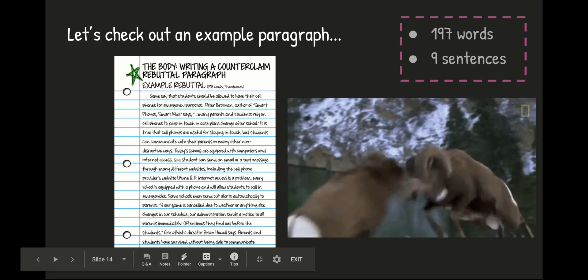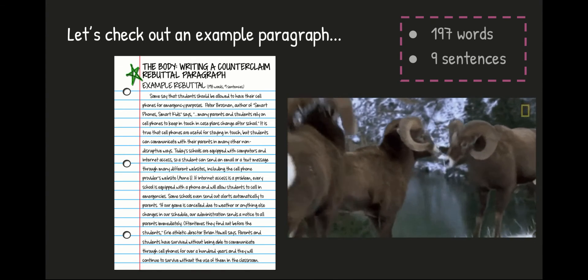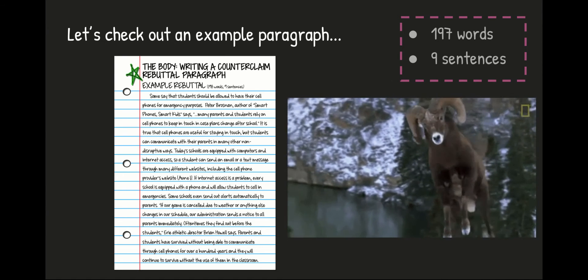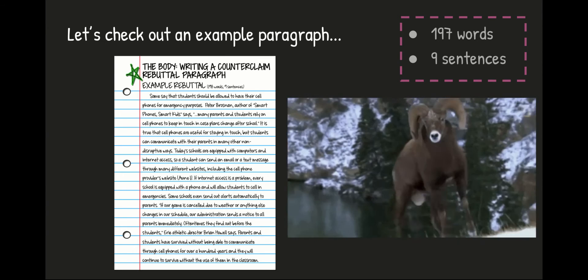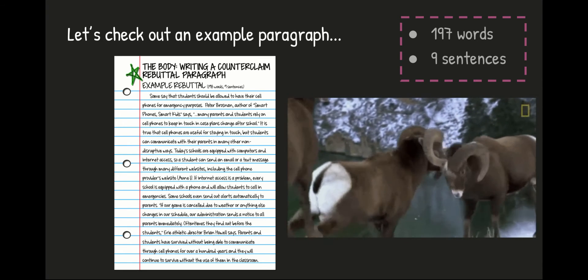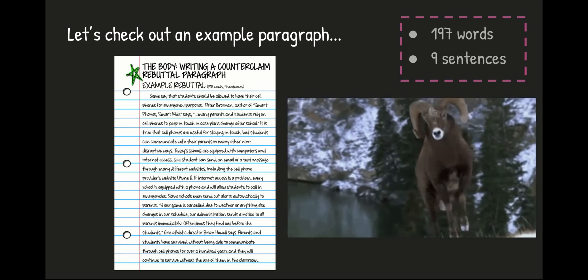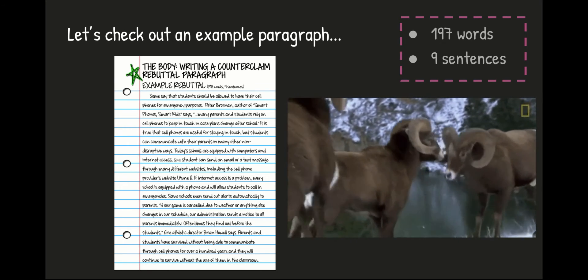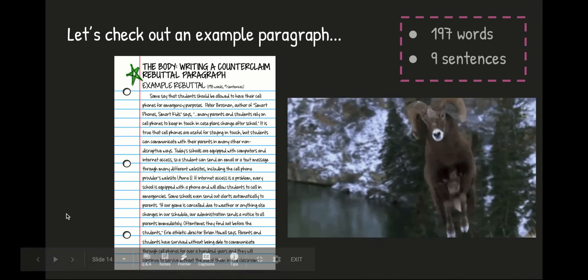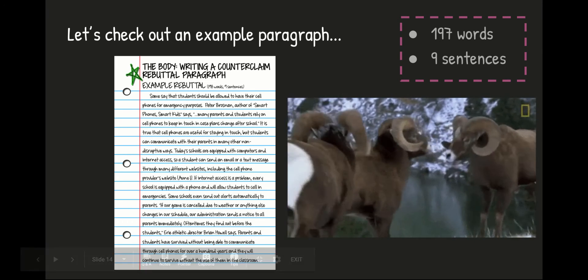My next line is what I like to call it a burn. You end with a statement that proves my logic over the counterclaim. Parents and students have survived without being able to communicate through cell phones for over 100 years, and they will continue to survive without the use of them at school. No one can argue with that. You can't come in and say, people didn't survive without cell phones for hundreds of years. That person doesn't make any sense. Whenever you end with a line like that, you automatically win your entire argument, and that's what you need.